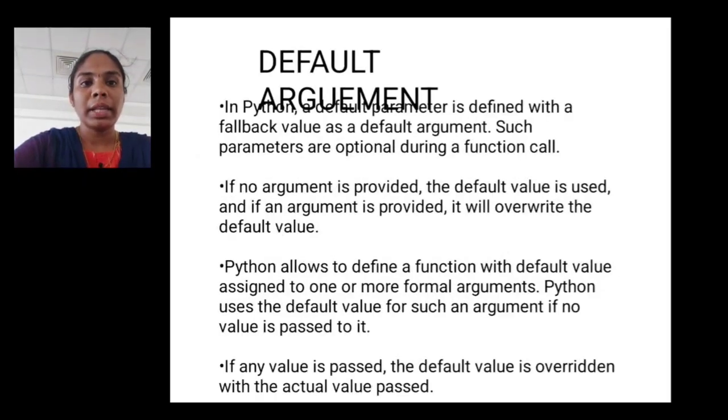Default arguments. In Python, a default parameter is defined with a fallback value as a default argument. Such parameters are optional during a function call. If no argument is provided, the default value is used, and if an argument is provided, it will override the default value. Python allows you to define a function with a default value assigned to one or more formal arguments. Python uses the default value for such argument if no value is passed to it. If any value is passed, the default value is overwritten.